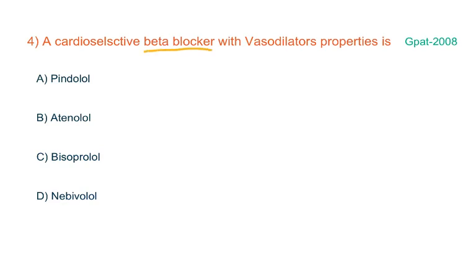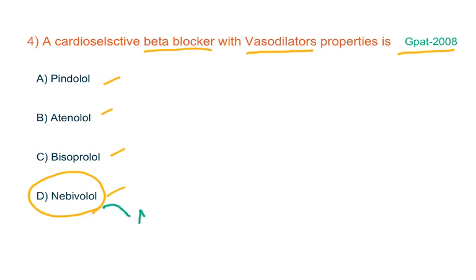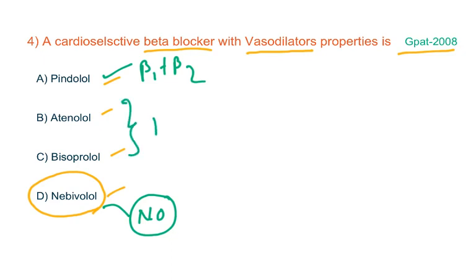Another question on beta blockers from GPAT 2008 is: a cardio-selective beta blocker with vasodilating properties is — options: pindolol, atenolol, bisoprolol, nebivolol. Nebivolol has this property; it releases nitric oxide, which is a vasodilator, and it also has beta blocking ability. Pindolol is a non-selective beta blocker blocking both beta1 and beta2, whereas atenolol and bisoprolol are cardio-selective beta blockers without vasodilating properties. So the answer is nebivolol.